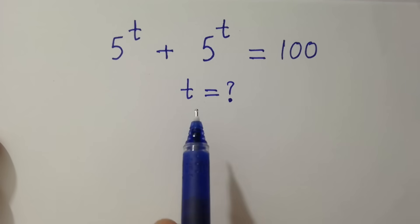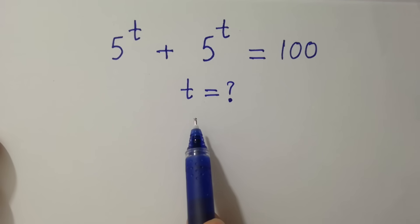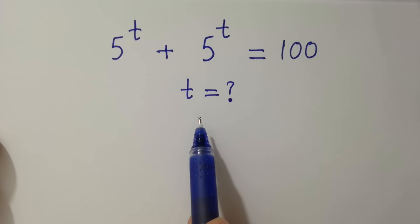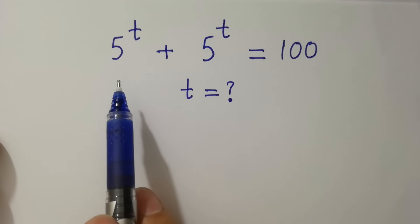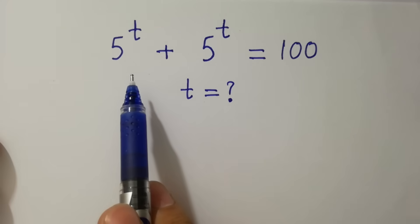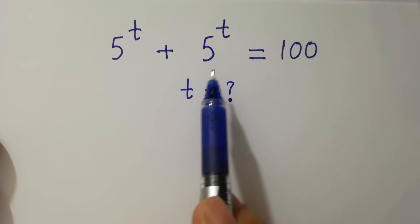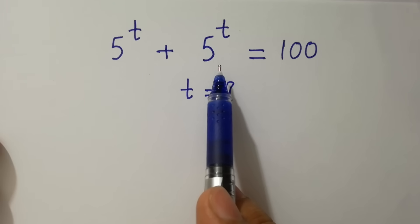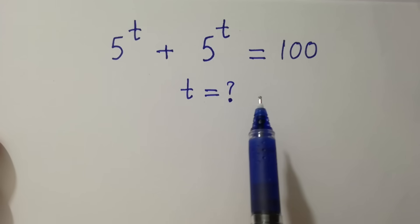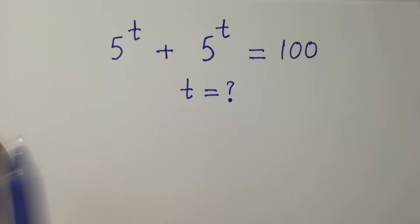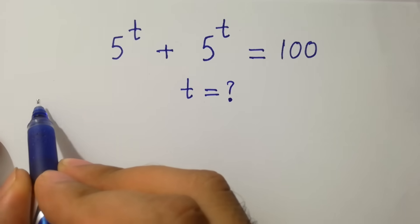Hello friends. Find the value of t if 5 to the power t plus 5 to the power t equals 100. Let's have a solution.